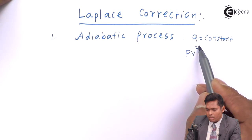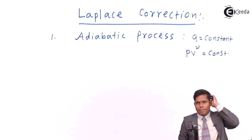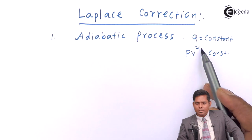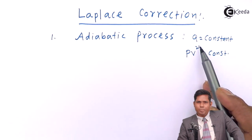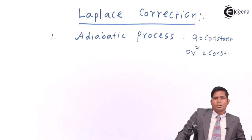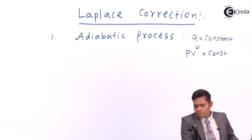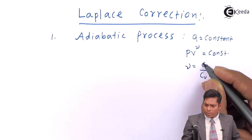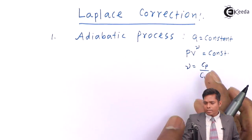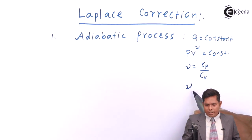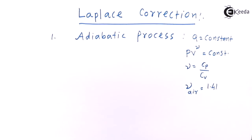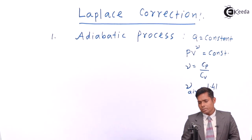For an adiabatic process, PV raised to gamma is constant. Here gamma is the ratio of specific heats — it is called the adiabatic constant. It is the ratio of two specific heats Cp and Cv, where Cp is the specific heat of a gas at constant pressure and Cv is the specific heat of a gas at constant volume. For air, which is diatomic, gamma is 1.41.